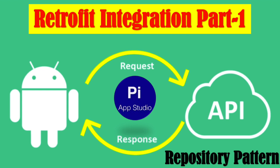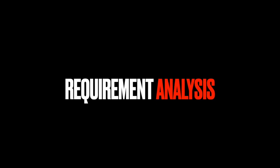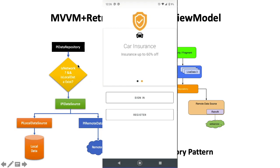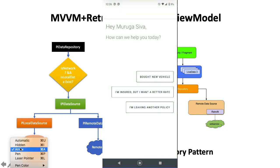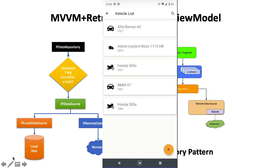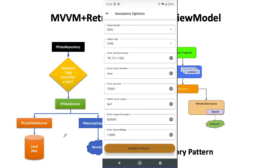Without wasting much time, let's get into the video. Before jumping into the implementation, I will show you what I'm trying to implement here. My requirement is when the network is available, I want to go ahead and fetch the information from the server and cache it locally.